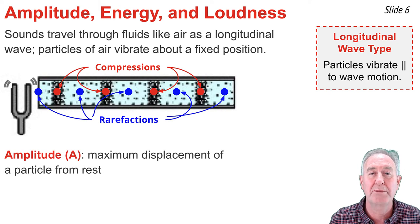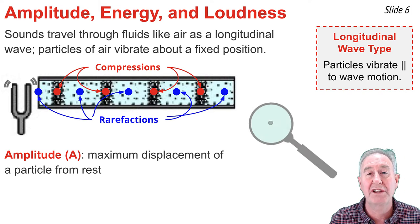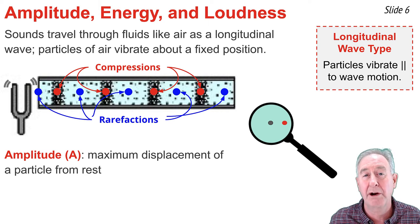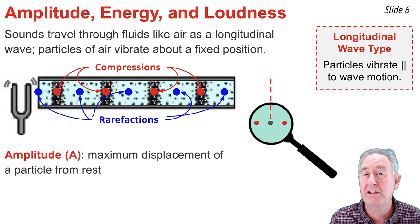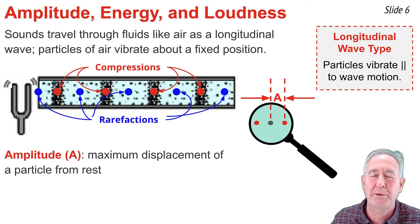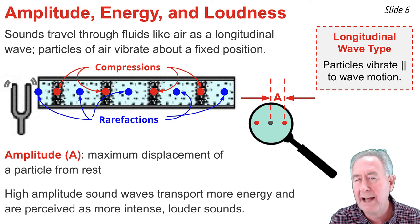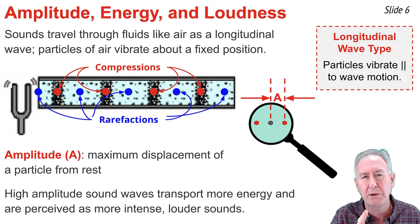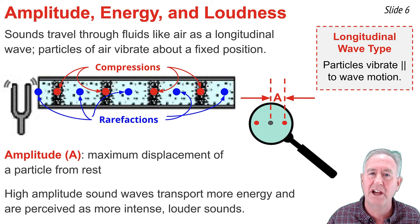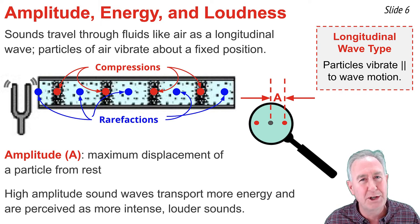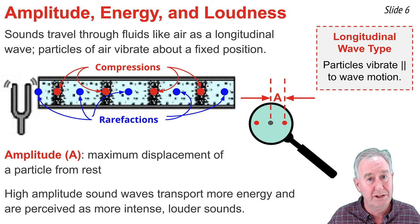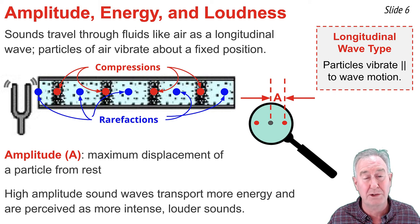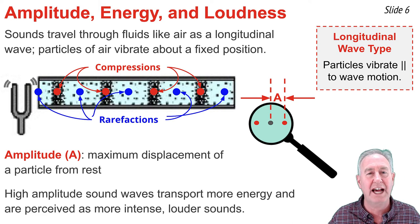Amplitude refers to the maximum displacement of a particle from its rest position. If we isolate a single particle and watch it vibrate from rest to a far right position, then back to a far left position, the amplitude is the distance from the rest position to the far right or far left position. If I were to whisper, the particles would vibrate with a small amplitude — very little energy put into the wave — and you'd perceive it as a soft, quiet sound. But if I were to holler, I'd put a lot of energy into the wave, the amplitude would be significantly greater, and that sound would be perceived as loud and intense.